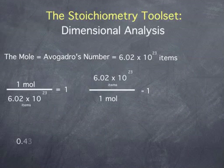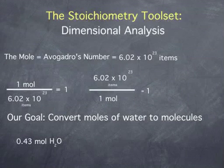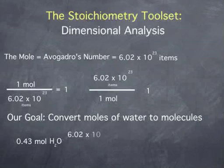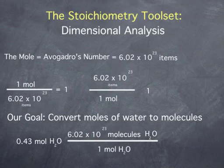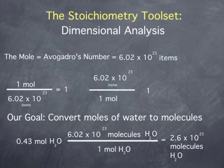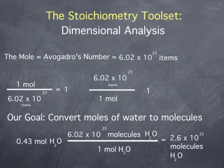Let's say that we have 0.43 moles of water and we would like to convert this to molecules of water. We begin by writing down our initial quantity of 0.43 moles water. To convert this to molecules of water, we multiply by the ratio: Avogadro's number of water molecules per mole of water. The multiplication gives the value 2.6 times 10 to the 23rd, with units of molecules of water. So we have achieved our goal of converting our quantity from moles of water to molecules of water.